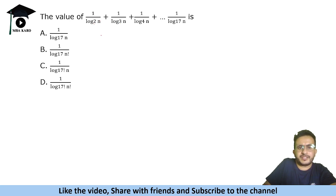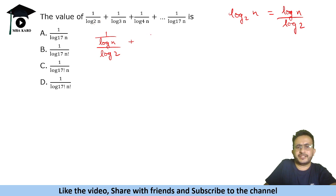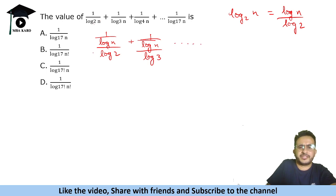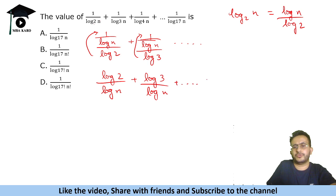Similarly, the second term becomes log 3 over log n, and so on. When we change everything to proper format, it becomes log 2 upon log n, plus log 3 upon log n, all the way up to log 17 upon log n.